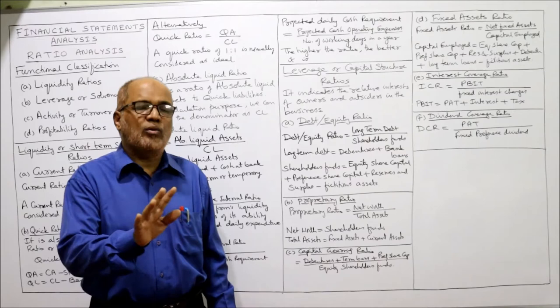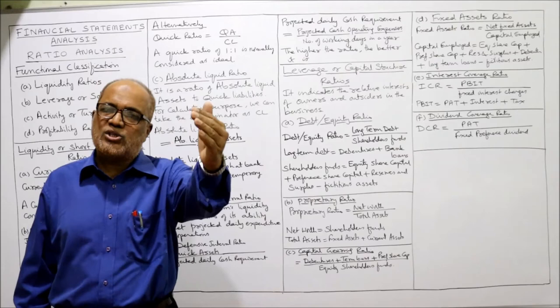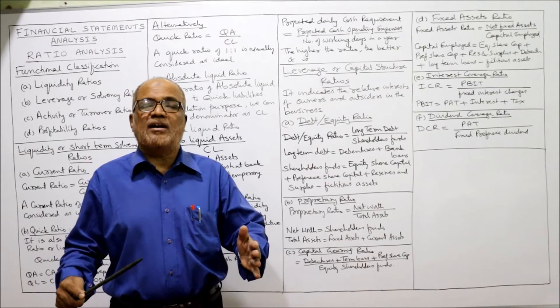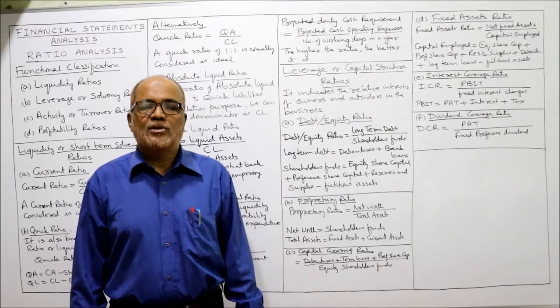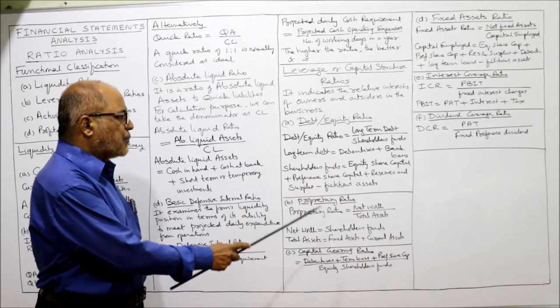The standard debt equity ratio should be 2 is to 1 — maximum debt should not be more than 2. If a business has a debt equity ratio of 2 is to 1 or less than 2, it is better. If a business has a debt equity ratio of more than 2, the business is more risky and outsiders who want to invest will not be willing to invest money in the business.